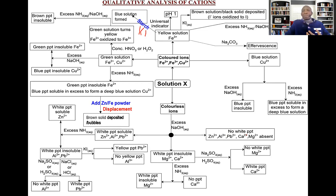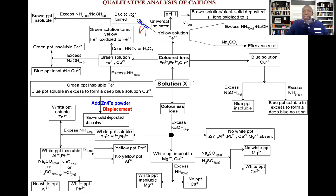Remember the PALM group — you can also start by adding aqueous ammonia. If you get a white precipitate insoluble in excess, that is lead, aluminium, or magnesium. To differentiate the three, add sodium hydroxide: white precipitate soluble in excess will be lead or aluminium; white precipitate insoluble confirms magnesium. Or starting with aqueous ammonia, a white precipitate soluble in excess is zinc only.